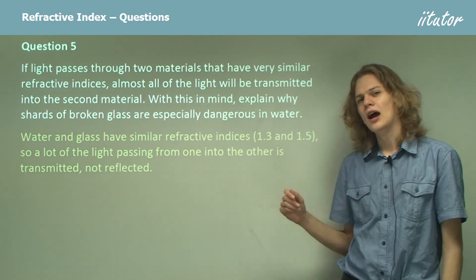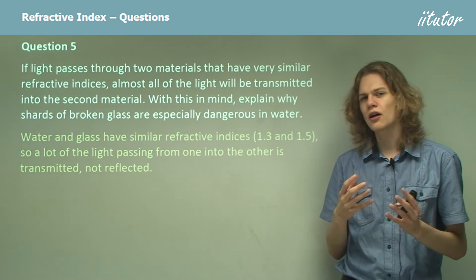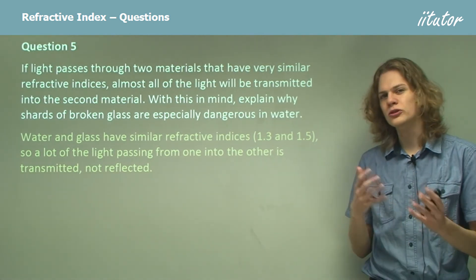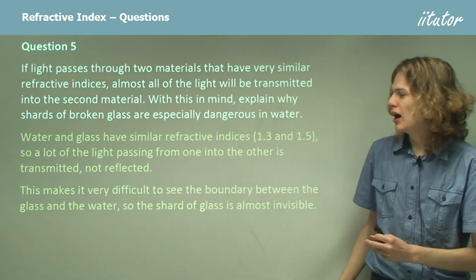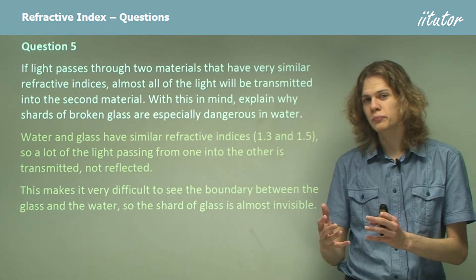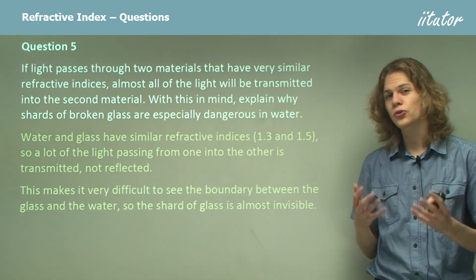So water and glass have similar refractive indices, about 1.3 and 1.5, and that means that a lot of the light passing from one to the other is not impeded at all. It doesn't get bent or sped up or slowed down very much. And this means that it's very, very difficult to see the boundary between the water and the glass. This means that the shard of glass becomes very, very difficult to see.